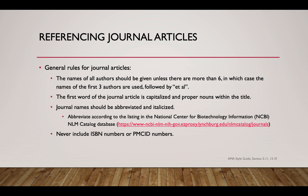For referencing journal articles, there are general rules to follow. The names of all authors should be given unless there are more than six, in which case you list only the first three authors followed by et al. The first word of the journal article title is capitalized along with any proper nouns. Journal names should be abbreviated and italicized. Keep in mind that the goal in AMA style is to use the fewest characters possible — this is much different from APA style.